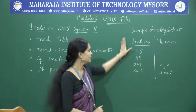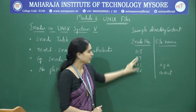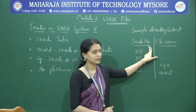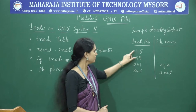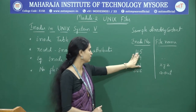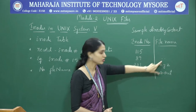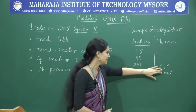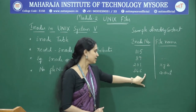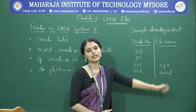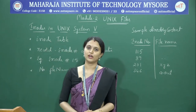Here is a sample directory content in table format — inode number and the file names in that particular directory. For example, inode number 115 is the directory itself, 89 is the parent directory (double dot), 201 is a file named XYZ present in the directory, and 346 is another file with a .out extension. This is all about inodes in UNIX System V.